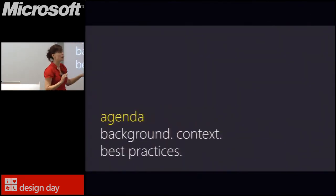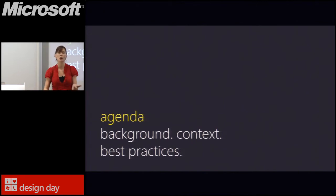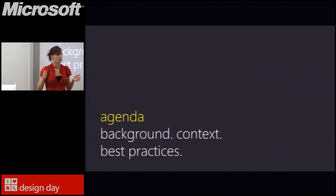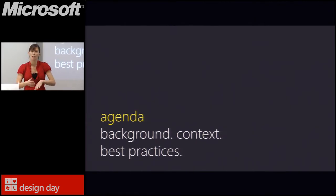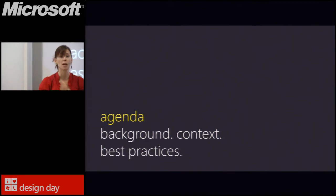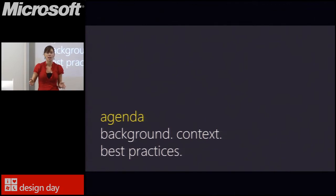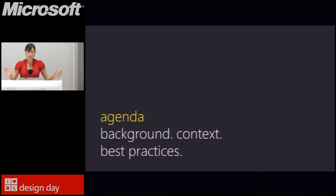I'm going to start with some background and context, showing an example of an application that is not necessarily well designed but has great functionality. Then we'll talk briefly about what makes a well-designed Windows Phone application. Then I'll dive into the best practices — I'm going to cover 10 of them. I'll use a real application, applying those best practices in Visual Studio and Blend, primarily Blend, to end up with a very well designed application.